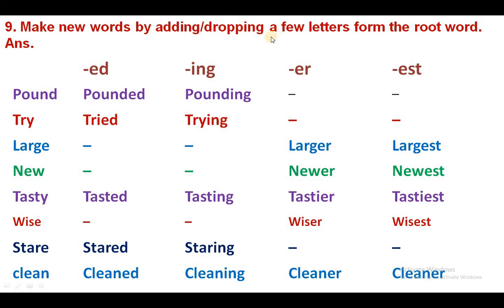Make new words by adding or dropping a few letters from the root word using endings: -ed, -ing, -er, -est. Try — tried, trying. Large — larger, largest. New — newer, newest. Tasty — tasted, tasting, tastier, tastiest. Wise — wiser, wisest. Stare — stared, staring. Clean — cleaned, cleaning, cleaner, cleanest.